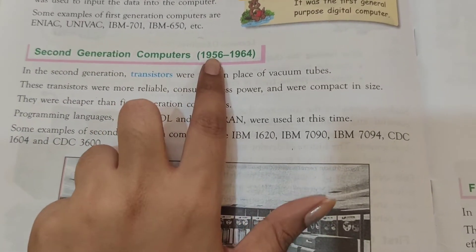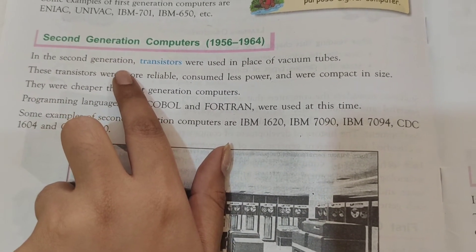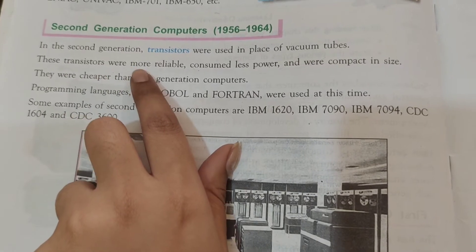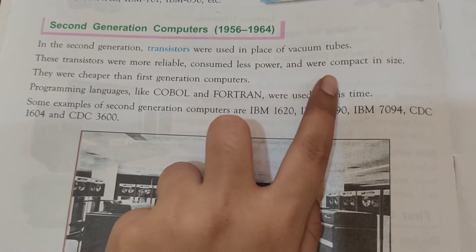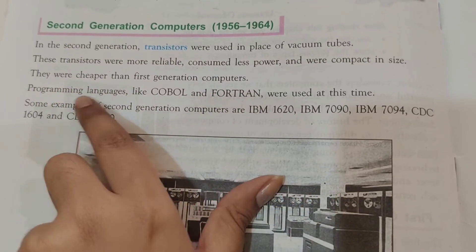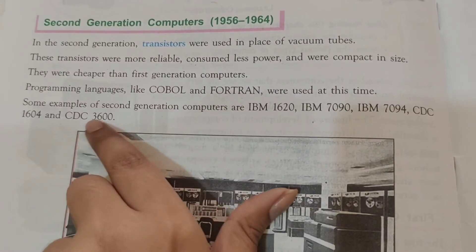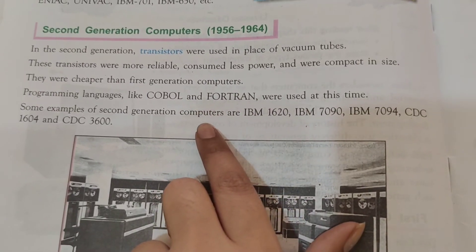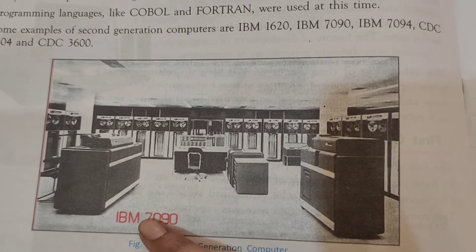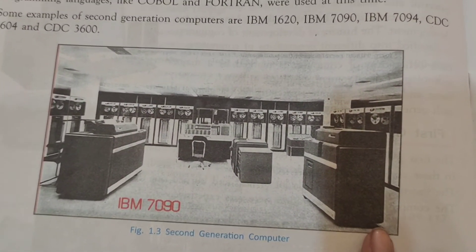Here comes the second generation computers, which is from 1956 till 1964. In the second generation, transistors were used in place of vacuum tubes. These transistors were more reliable, consumed less power and were compact in size. They were cheaper than first generation computers. Programming languages like COBOL and FORTRAN were used at this time. Here you can see a few examples of the second generation computer, including the IBM 7090.